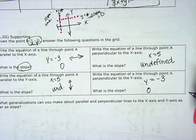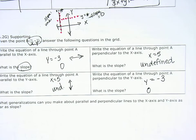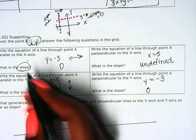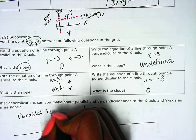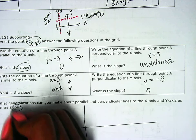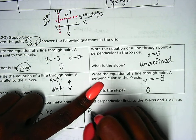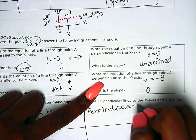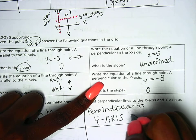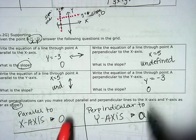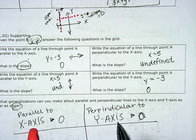It says: what generalizations can you make about parallel and perpendicular lines to the x and y axis as far as their slope? We're going to make four different generalizations. Drawing my chart: if it's parallel to the x axis, the slope is 0. Also, if it's perpendicular to the y axis, the slope is 0. So our first generalization: slope is 0 when it is parallel to the x axis or perpendicular to the y axis.